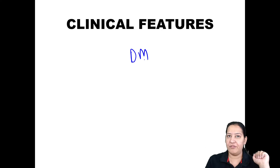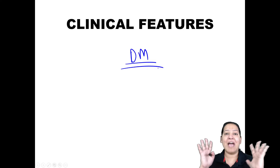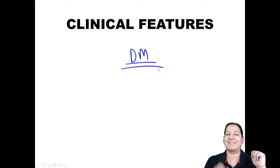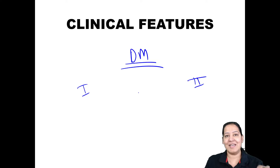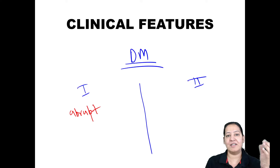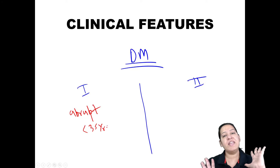I have discussed the two hormones insulin and glucagon, how they work during meal and fasting state. We've also discussed the classification of diabetes — type 1 and type 2 in detail — their pathogenesis and differences. In the last lecture I covered clinical features, so let me continue with those and then move on to complications, diagnosis, and treatment.